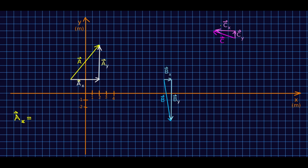Here are several vectors a, b, and c, and I've broken each of them into its component vectors. Let's think about how we might write the component vector ax. We could use magnitude-direction form like we've been doing — I could call it four meters in the positive x direction.